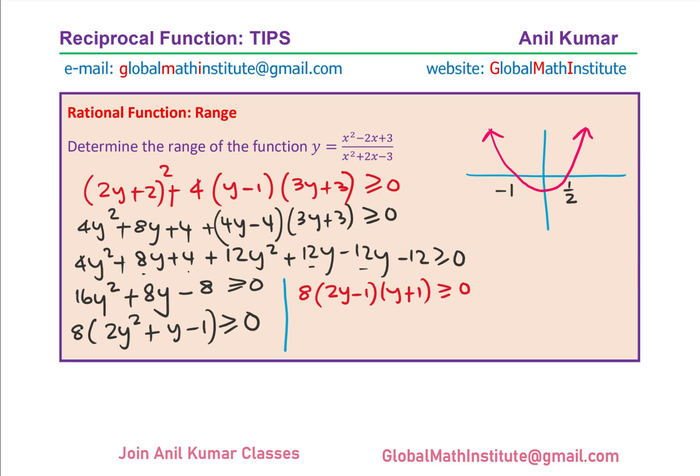So we see that it is positive or you can say non-negative on the right side of half and on the left side of minus 1. So that gives you possible values for y from here, you get the idea. And therefore, now we can conclude the range. Can you tell me what should be the range now?